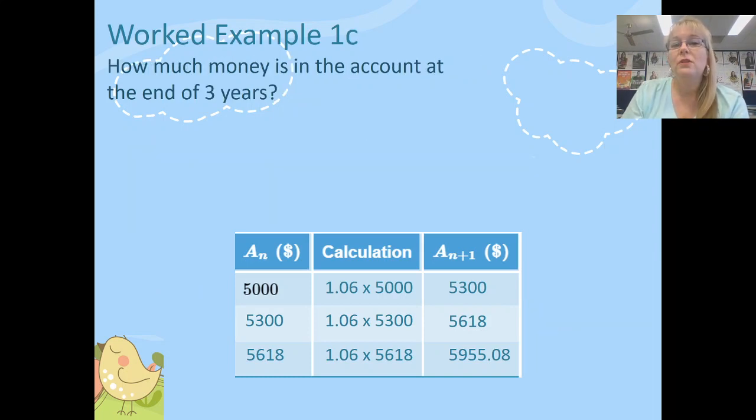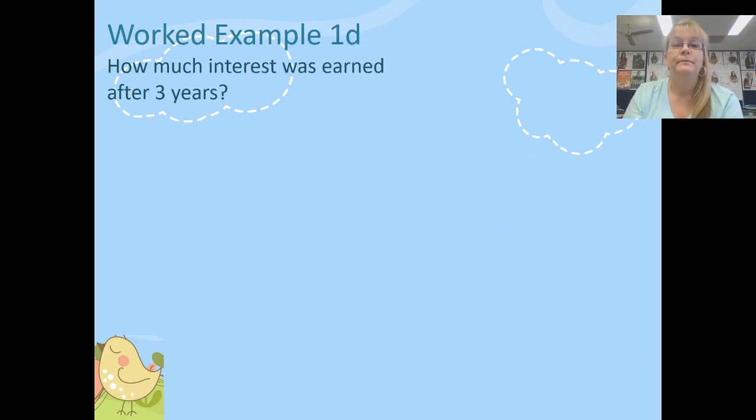Now the question wants to know how much is in the account at the end of three years? Well that's going to be A_3. And how much interest was earned after three years? This is where you need to remember the formula A equals P plus I. Remembering that A is the amount at the end, P is the principal and I, capital I, is the interest in dollars that is earned.